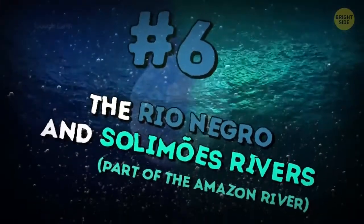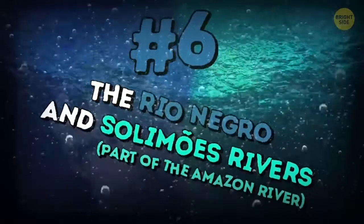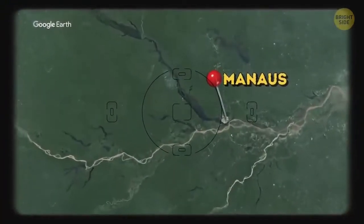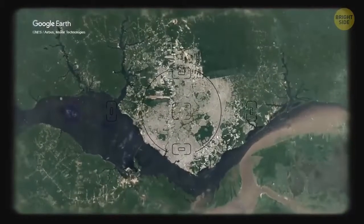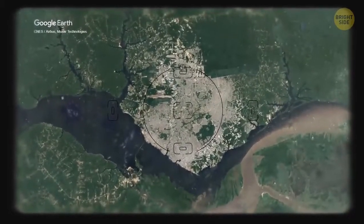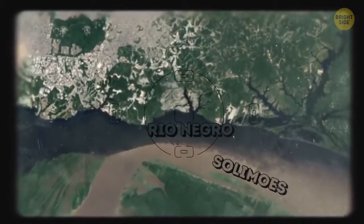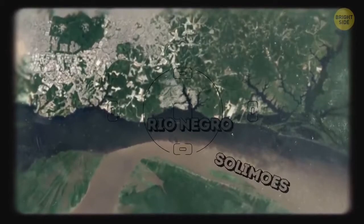The Rio Negro and Solimões Rivers, part of the Amazon River. Six miles from Manaus, in Brazil, Rio Negro and Solimões Rivers run into each other, but don't mix for about 2.5 miles. The Rio Negro is dark and Solimões light. They have a different temperature and speed of flow.